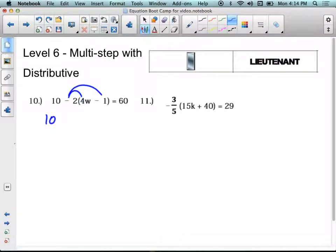So let's just handle the left and simplify that first. So let's distribute this negative 2 across the parentheses. This is 10. Negative 2 times 4w is minus 8w. Negative 2 times negative 1 is positive 2. Watch your signs. Now that I've got this, I can combine like terms. I have a 10 plus a 2. That would be 12 minus 8w equals 60.